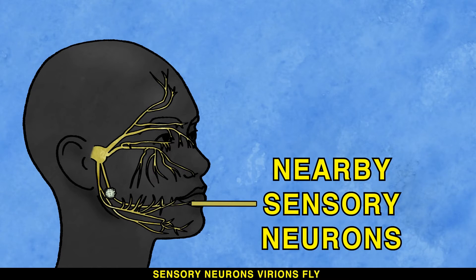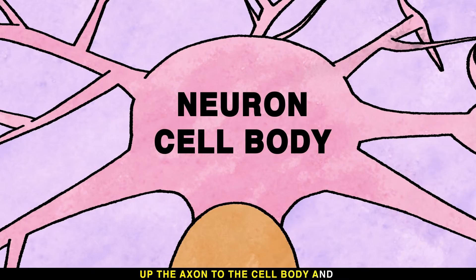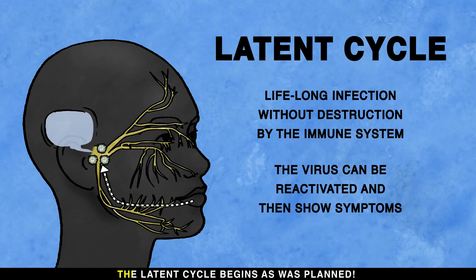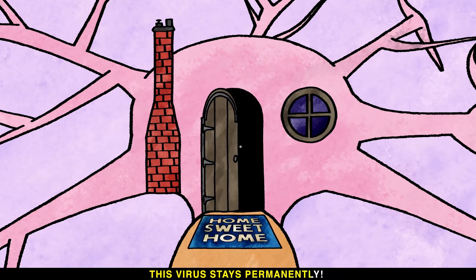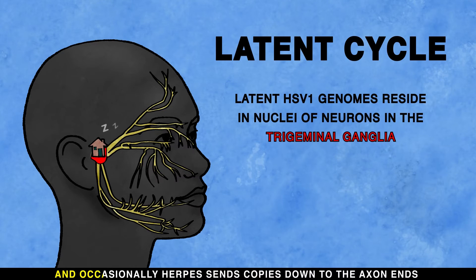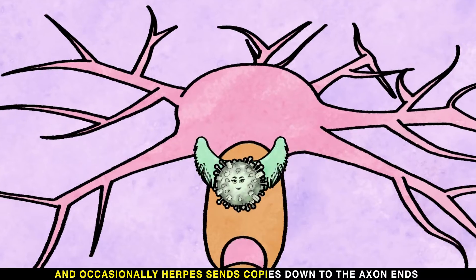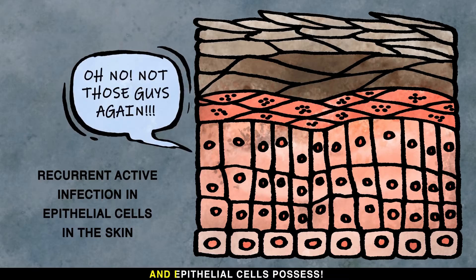Virions fly up the axon to the cell body, and the latent cycle begins as was planned — this virus stays permanently in the local nuclei. And occasionally herpes sends copies down the axon to epithelial cells.